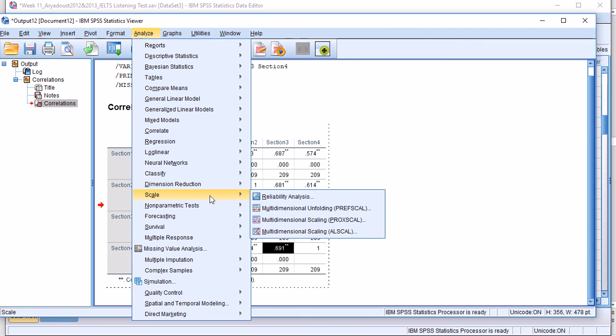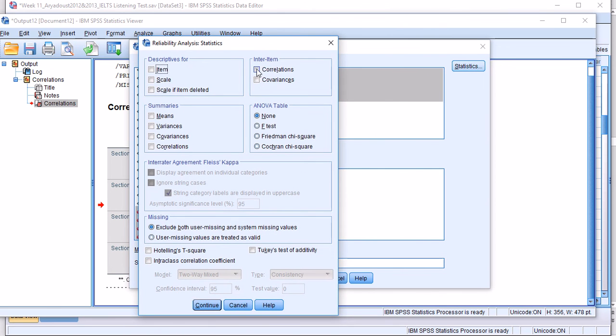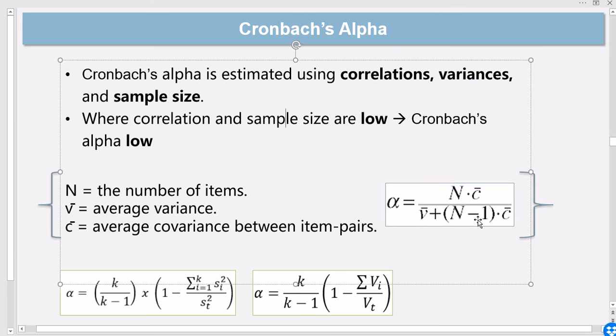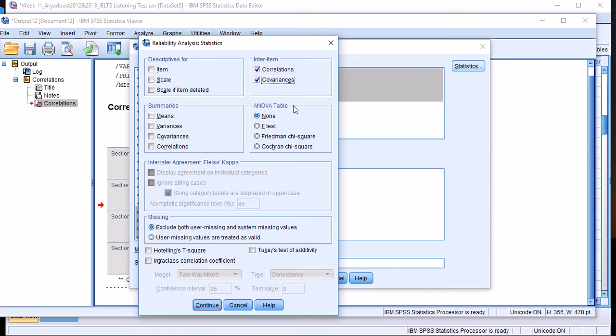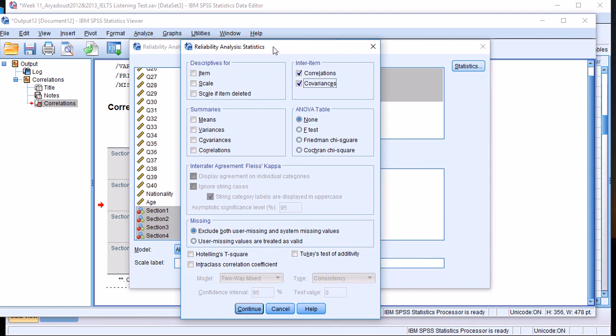As I have already been mentioning, yes there is, and that's called internal consistency, Cronbach's alpha value. This is how you estimate it: you go to Analyze, Scale, Reliability Analysis, and then you populate the items table on the right-hand side. You go to Statistics, and I prefer to choose both correlations and covariances.